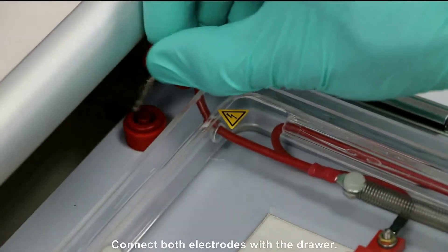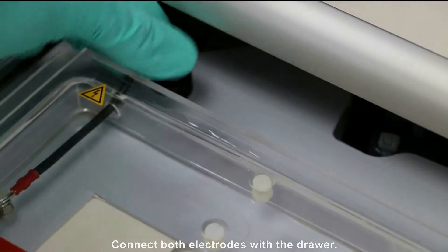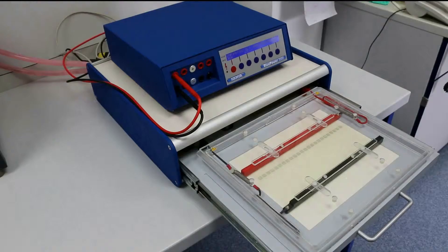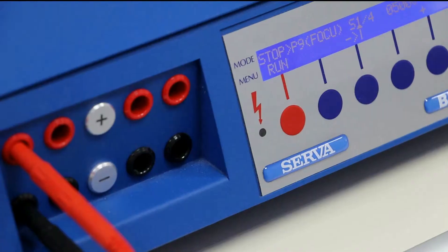Connect both electrodes of the lid with the system. Therefore, insert the plugs into the drawer's pins. Slide the drawer back into the unit and start the run.